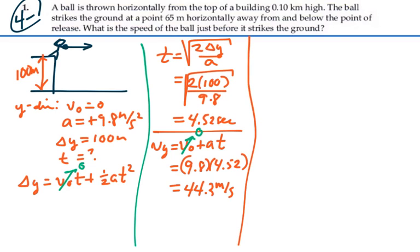Now, if we consider the x direction, we're going to actually move a displacement of 65 meters. And the time is going to be the same. So that's the key for all these problems, is that these two separate motions are done simultaneously. And so our time is going to be 4.52 seconds.